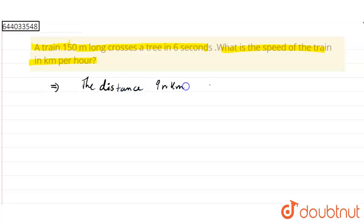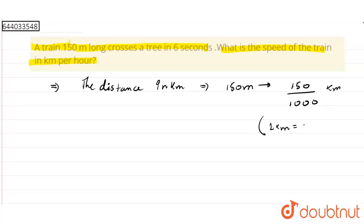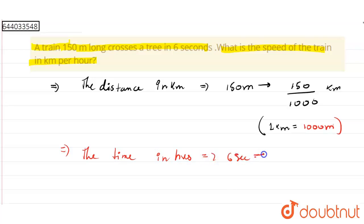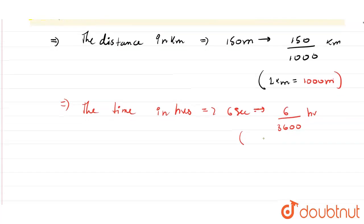The distance in kilometers: 150 meters will be 150 divided by 1000 kilometers, because we know that one kilometer equals 1000 meters. Now the time in hours equals six seconds, which can be written as 6 divided by 3600 hours, because we know that one hour equals 3600 seconds.